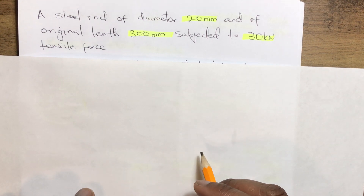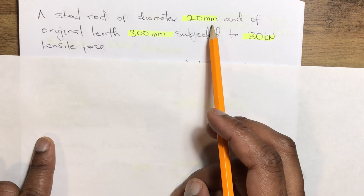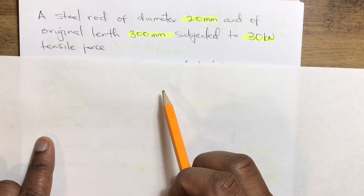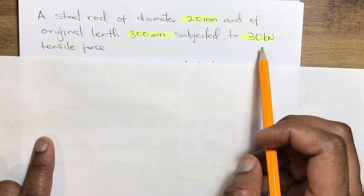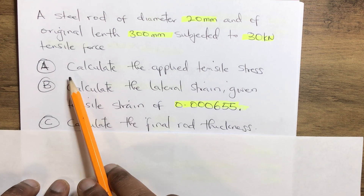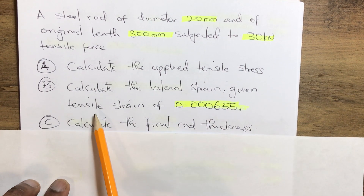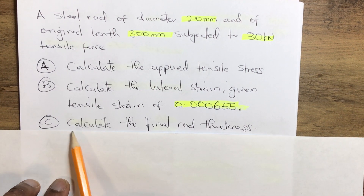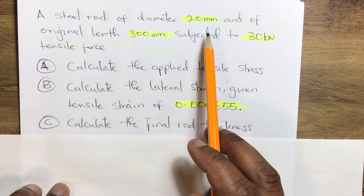Welcome to our educational channel. Today we have a steel rod of diameter 20 mm and original length 300 mm subjected to a 30 kilo Newton tensile force. We are asked to calculate three entities: first, the applied tensile stress on the steel rod; second, the lateral strain given that the tensile strain is 0.00655; and third, the final rod thickness.